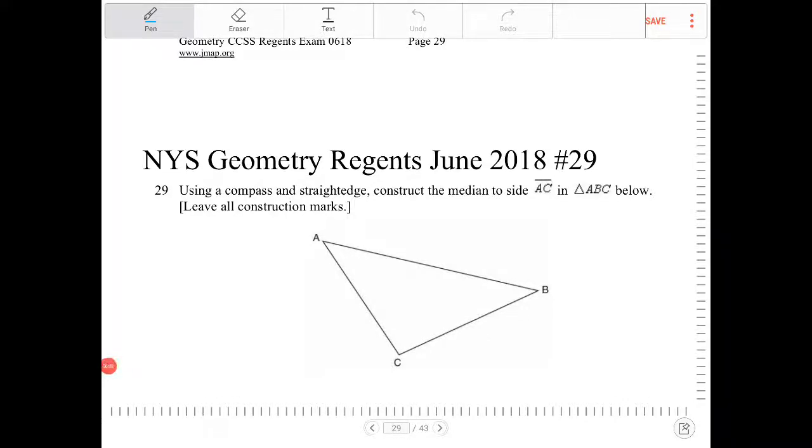Using a compass and straight edge, construct the median to side AC in triangle ABC below. Leave all construction marks.